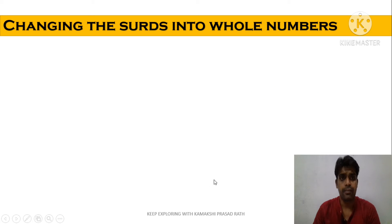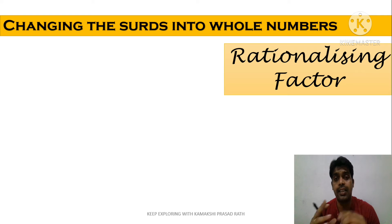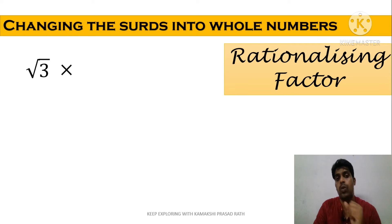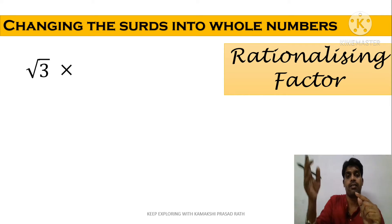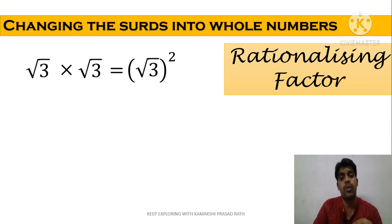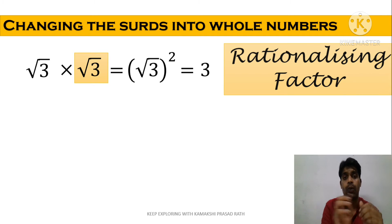Now let's see what is the rationalizing factor. Suppose we have the surd root 3, and we have to convert it into a whole number — we have to remove that square root. The square root will be removed only when it is squared. So root 3 multiplied by root 3 gives root 3 whole squared, which equals 3. So here root 3 is called the rationalizing factor, because multiplying by it converts the expression to a whole number.